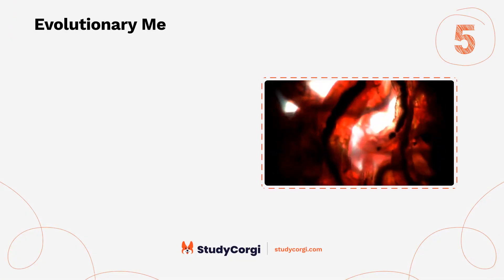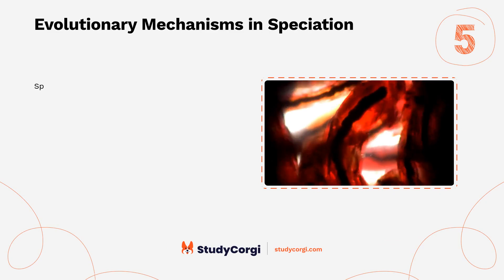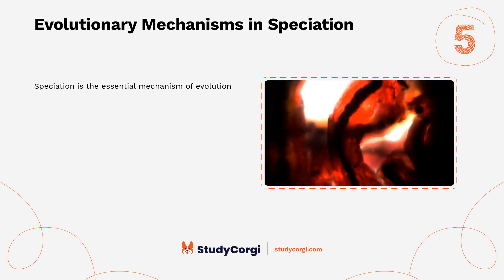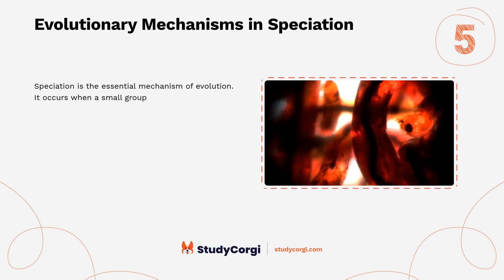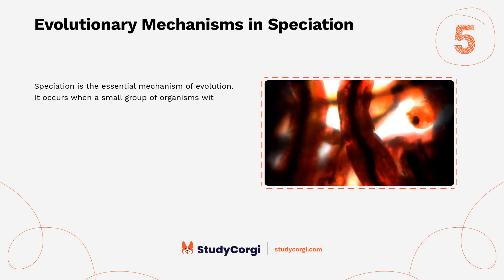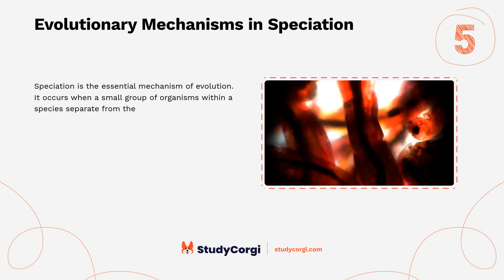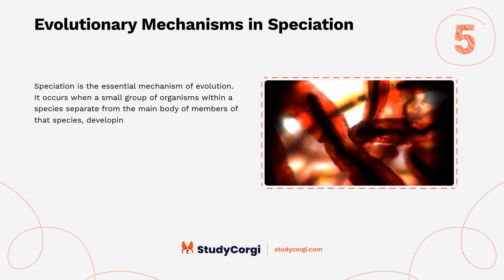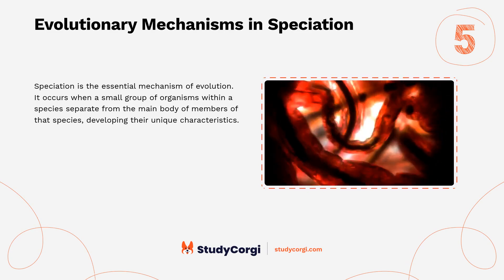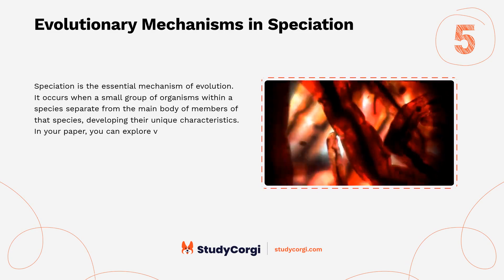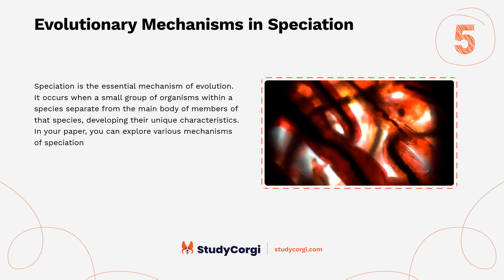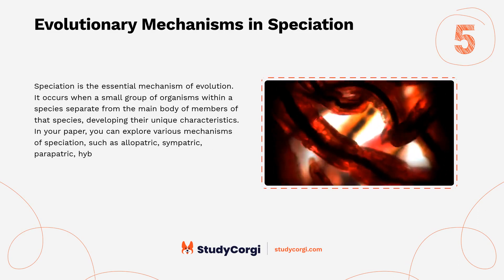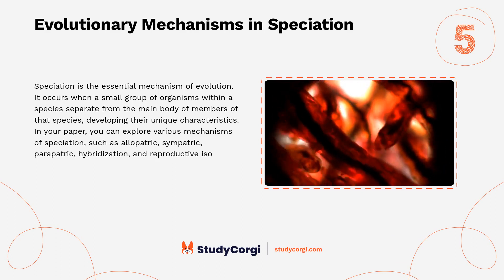Evolutionary Mechanisms in Speciation. Speciation is the essential mechanism of evolution. It occurs when a small group of organisms within a species separate from the main body of members of that species, developing their unique characteristics. In your paper, you can explore various mechanisms of speciation, such as allopatric, sympatric, parapatric, hybridization, and reproductive isolation.